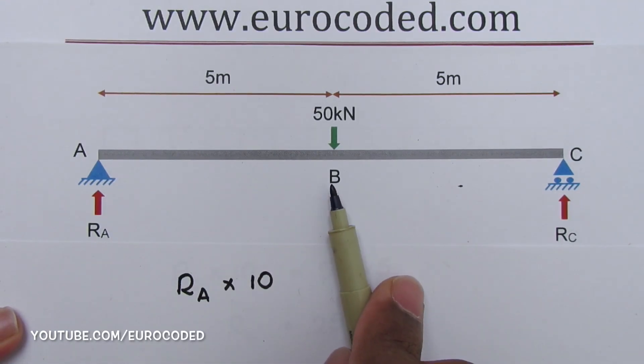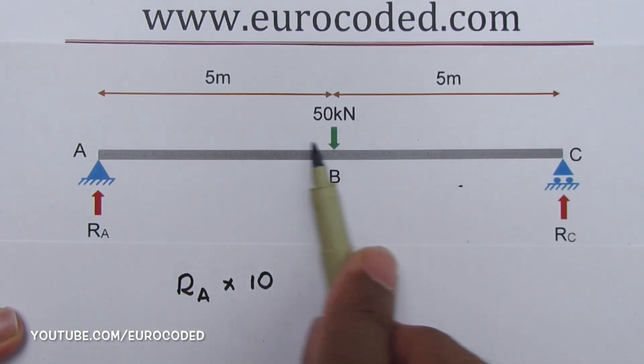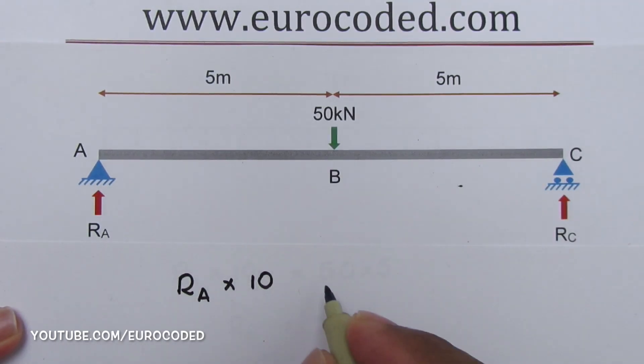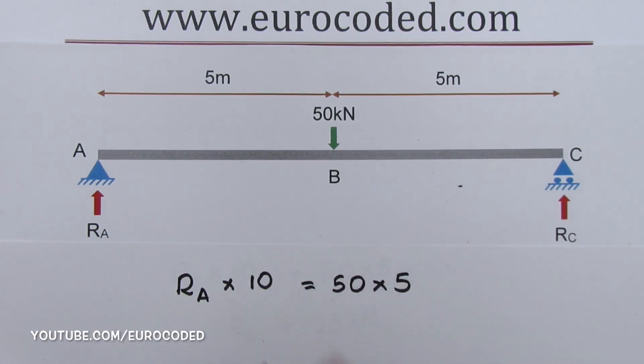Then we have an anticlockwise moment due to 50 kilonewtons with a lever arm of 5 meters. So we can write this is equal to... We can resolve this equation and then we can write RA is equal to 25 kilonewtons.